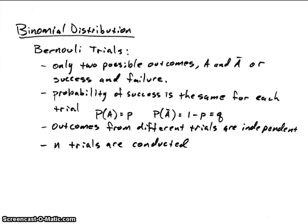The outcomes from different trials are independent, and there are n trials conducted. So you essentially do the same experiment over and over again, n times. And every time you do the experiment, it is independent of the other times that you've done the experiment.